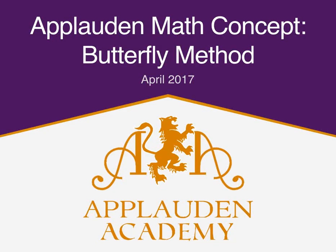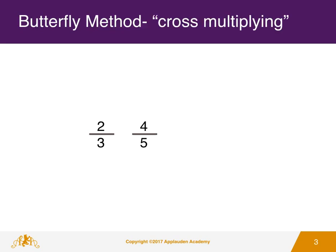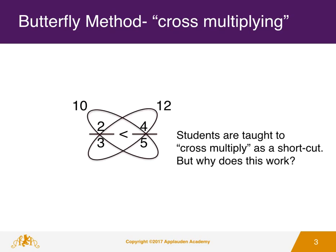Today's math lesson is the butterfly method. We are Applawn Academy, a premium learning center. Which is bigger: two-thirds or four-fifths? Since the denominators are different, the numerators cannot be compared. Students are taught to cross multiply as a shortcut. This method is called the butterfly method.